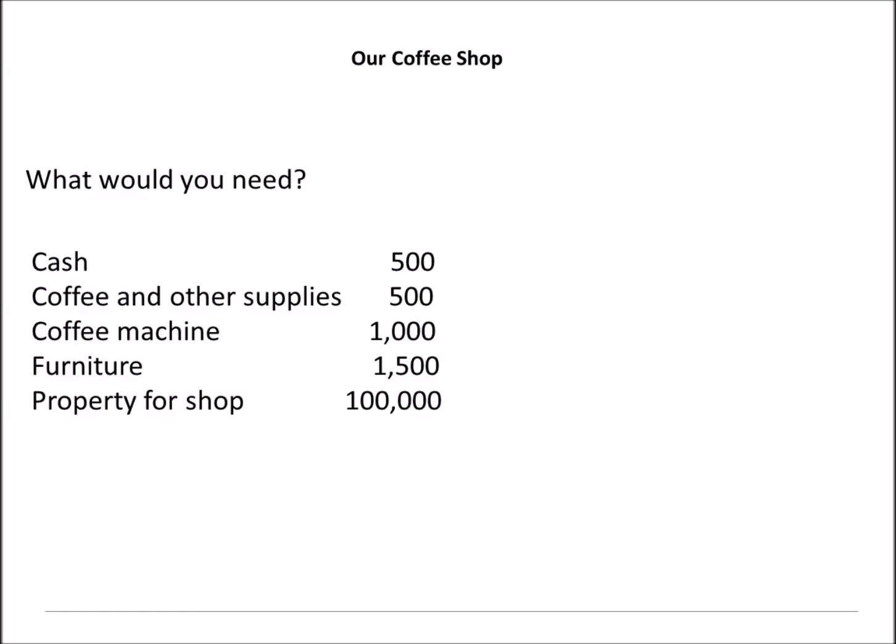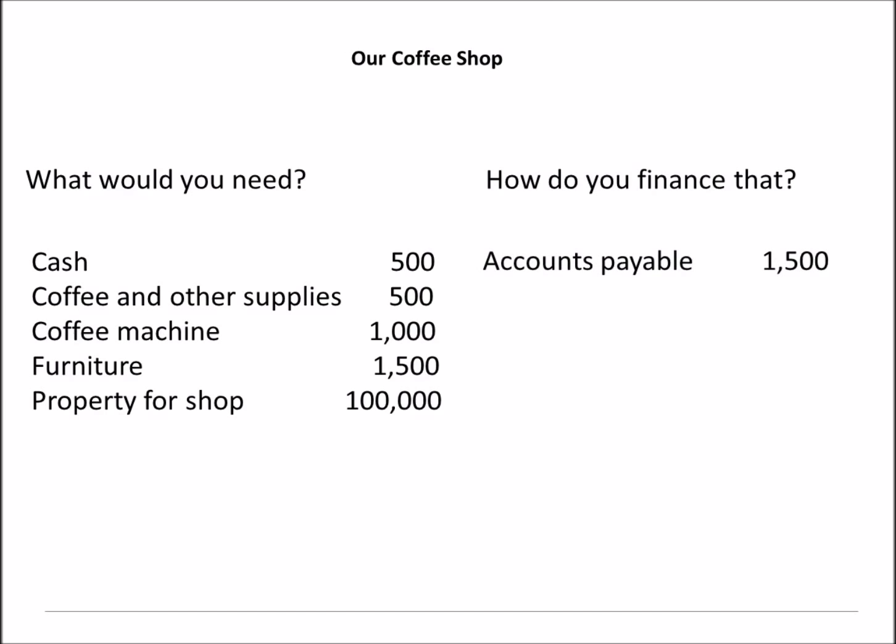We don't have $100,000. Let's say we've got $20,000 to cover the deposit, so we get a bank loan for the remaining $80,000. The money we owe the suppliers for the coffee, supplies, and the coffee machine is $1,500. We call these accounts payable.